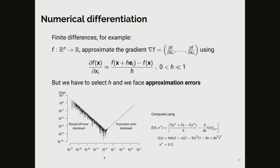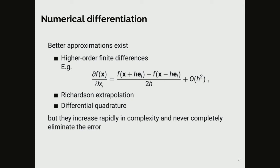Numerical differentiation means approximating the values of derivatives using the limit definition of the derivative with a small constant h. This is straightforward and easy to think about, but the problem is you get approximation errors: round-off errors and truncation errors. You might think that by decreasing h as much as possible you could eliminate the errors, but this is not the case. Up to a point you can decrease the truncation error, but if you keep decreasing h, round-off error becomes dominant and destroys all your derivatives.